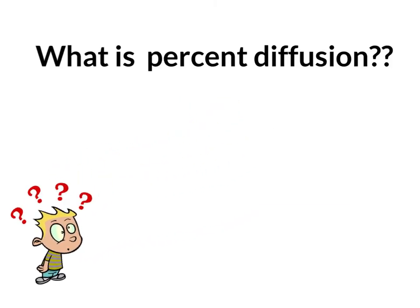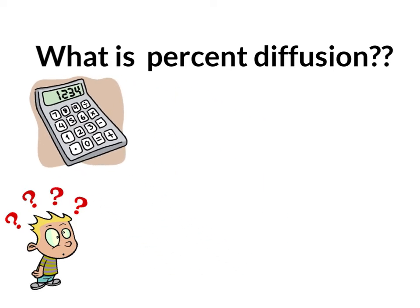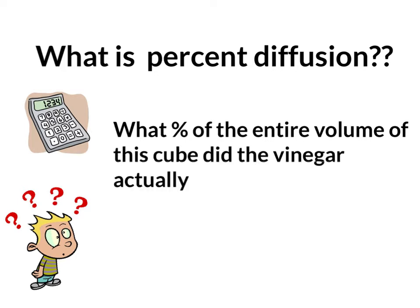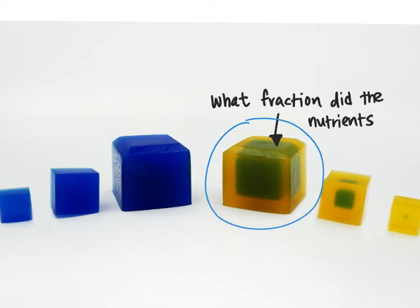So first, it's very important to know what percent of diffusion is. When we calculate percent of diffusion, we are trying to figure out what percent of the entire volume of this cube did the vinegar actually penetrate. Just as a quick reminder, the cubes represent cells and the vinegar is our nutrients. So we're trying to figure out what fraction of the entire cell did the nutrients actually reach.